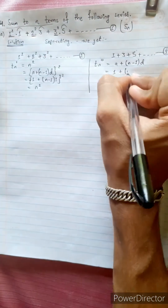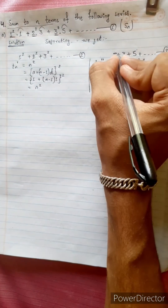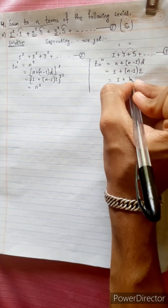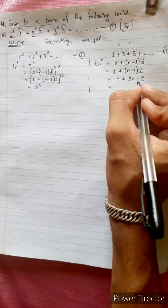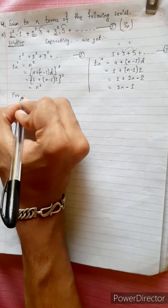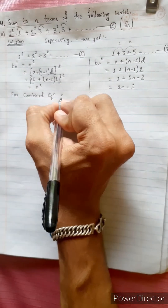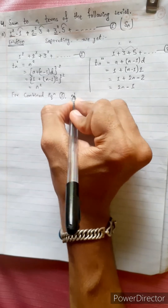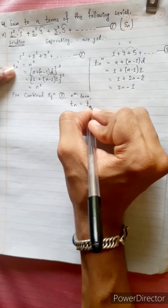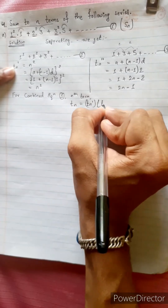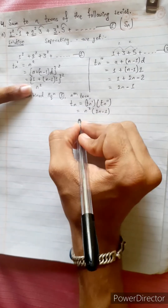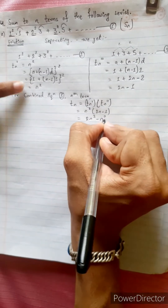First term a1 plus n minus 1 times difference 1 equals 1. Then 3 equals 2 plus 3, 5 equals 2 — difference 2 equals 1 plus 2n minus 2 equals 2n minus 1. Combining equation 1, nth term: T_n double dash equals n square times (2n minus 1) equals 2n cubed minus n square.